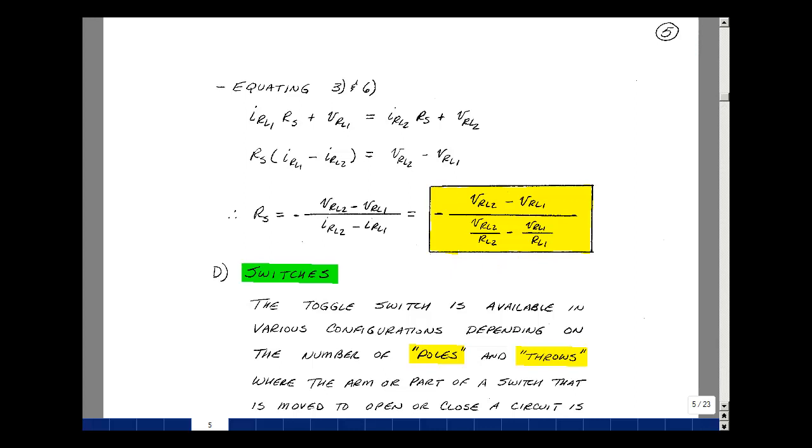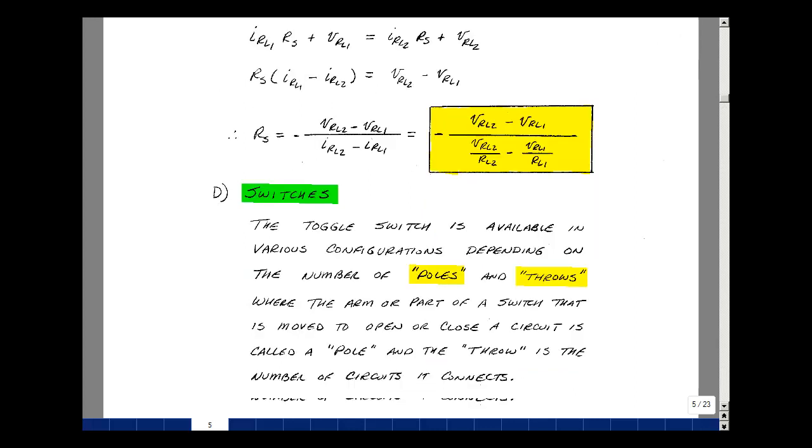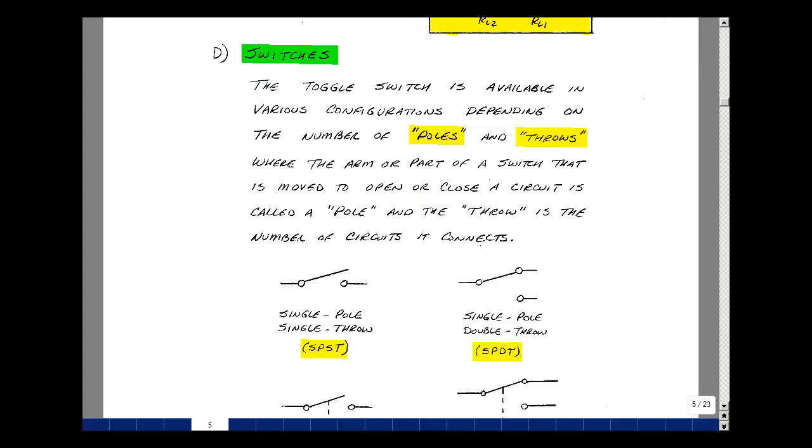In ECE 201, we talked about switches. Let's take a little bit of a review of that. The toggle switch is just that. It just toggles between two circuits. Now the arm, or the part of the switch that's moved to open and close the circuit, is referred to as a pole, and the throw is the number of circuits that it connects. That's a pretty formal definition, but it might be easier to look at a picture.